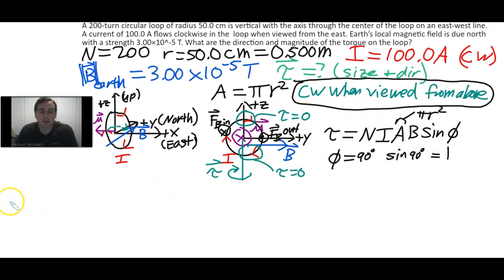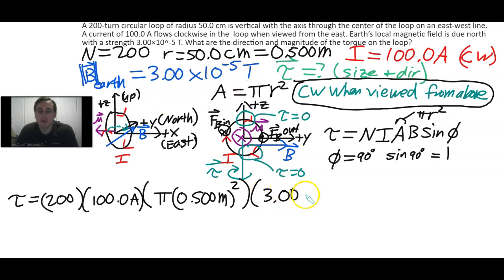And then remember a here is going to be pi r squared. So I think we can put all the numbers in for tau. So tau should be n. So n was 200 times the electric current. That was 100 amperes. 100 amperes. A is pi r squared. So that's pi times r was 0.500 meters. And we have to square that. And then we need b, which is the strength of the magnetic field, which is 3.00 times 10 to the minus 5 teslas. And again, sine of 90 degrees. We just have 1, so we'll just leave that off. So let's get this tau.